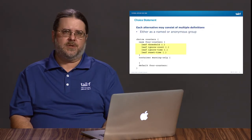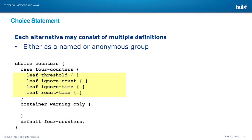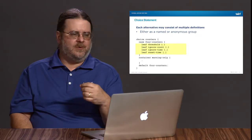Sometimes when you're using choice, you don't have a case of a simple single data item. Here we see an example of adding the case statement to the choice statement. In this case, we see a case called four counters. So we could have threshold, ignore count, ignore time, reset time. In the hierarchy of our model and our paths, four counters wouldn't actually appear — it would be counters slash threshold, counters slash reset time. Another alternative to using case is to do a container. You can also state what the default case or contents of the choice should be by using a default statement on the choice statement.